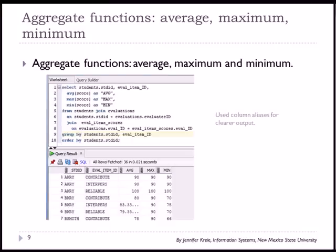So here is our example where we are going to calculate the average, the maximum, and the minimum. In the select clause I have listed student team ID and eval item ID and then I have added the average function, the maximum function, and the minimum function. And we see the results below.